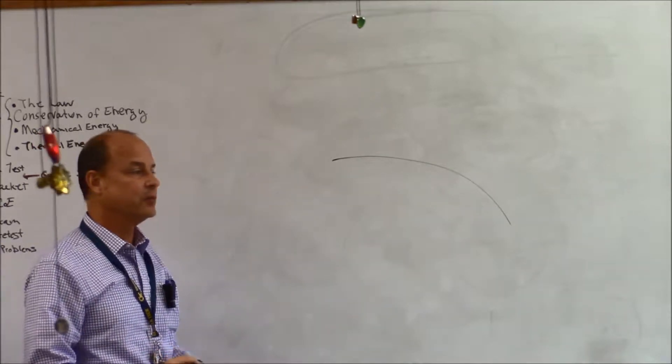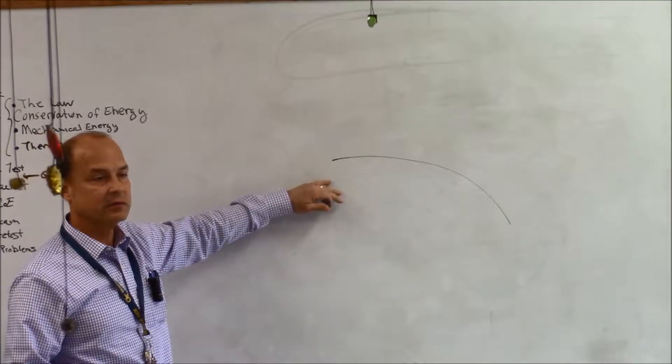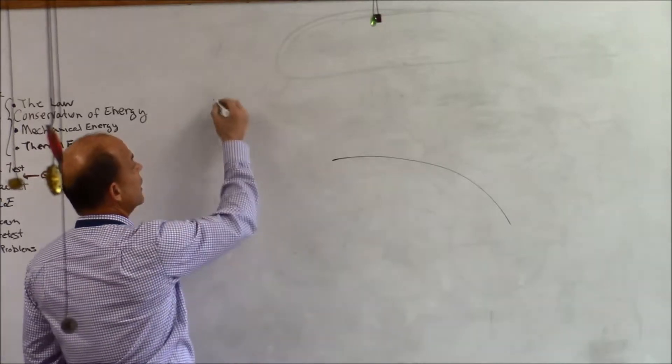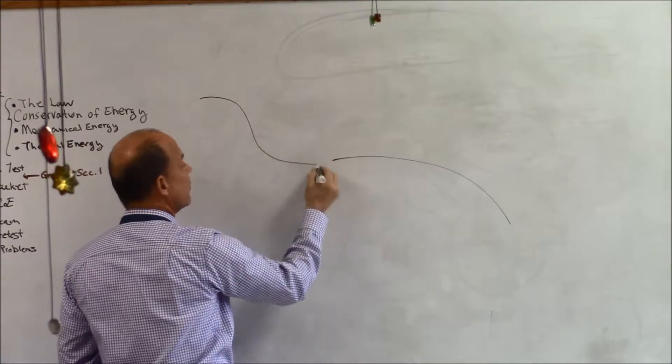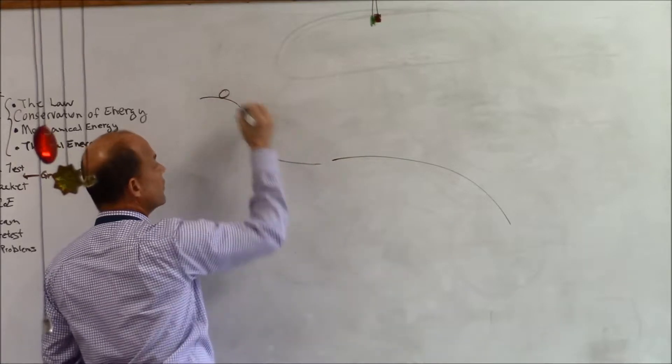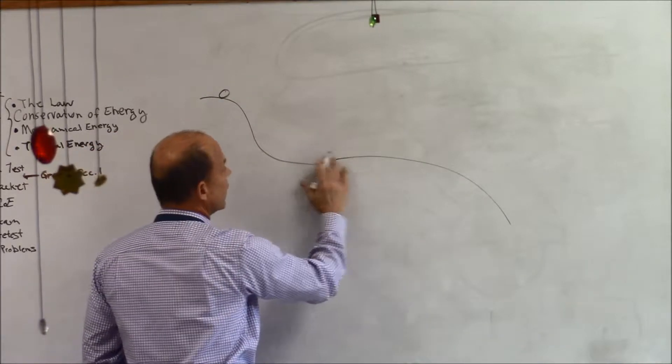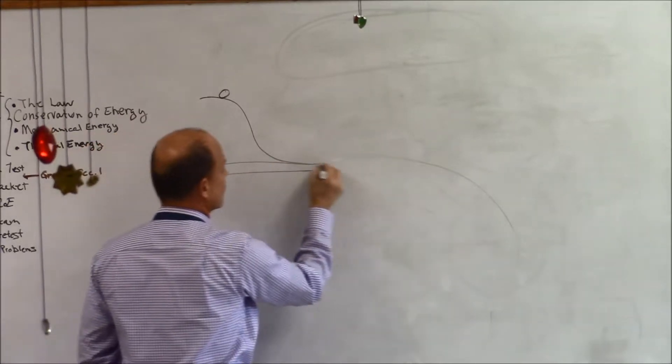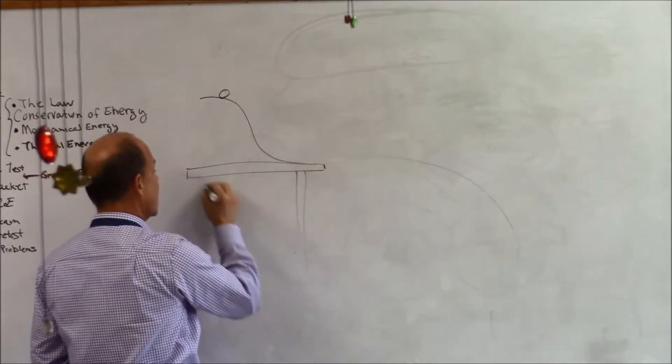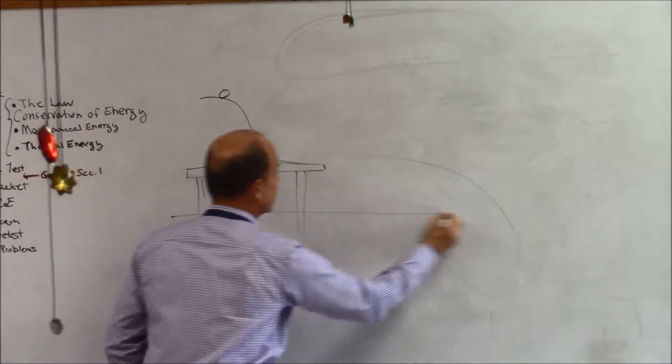The last problem is very similar, but instead of a gun it's going to be a ball on a ramp. The ball is going to be up here on the ramp, and the ramp is on a table, and the table is a certain height above the ground.